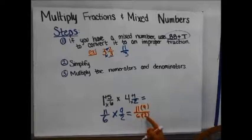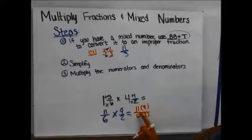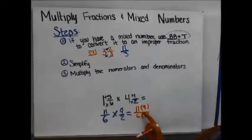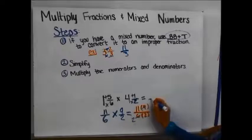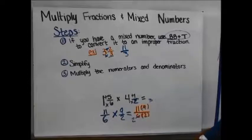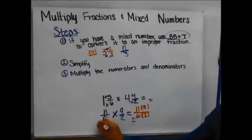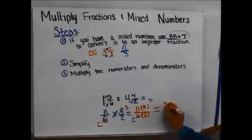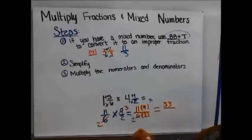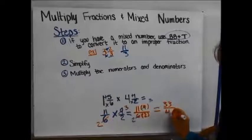I'm looking to see if there are common factors between any numerator and any denominator. Eleven and six have no common factors, and neither do eleven and two — they're relatively prime. But nine and six share a factor of three: 3 goes into 6 twice, and 3 goes into 9 three times. After simplifying, multiply straight across: 11×3=33 and 2×2=4, giving 33/4.